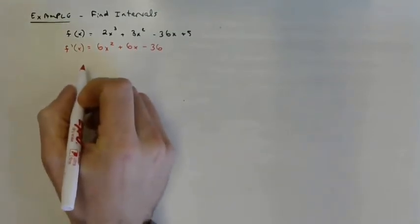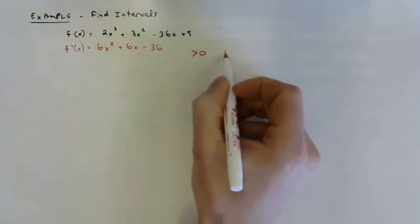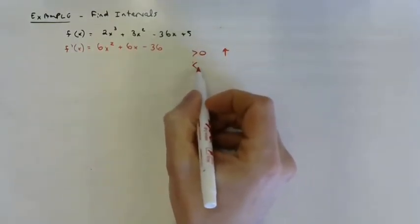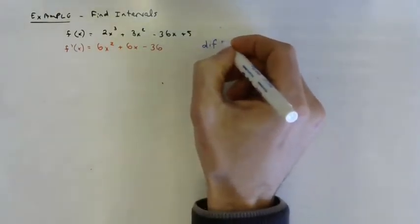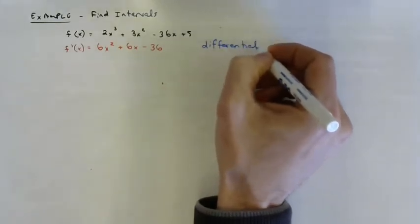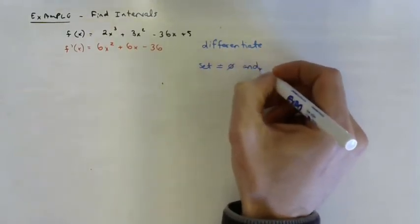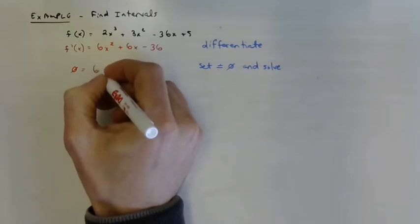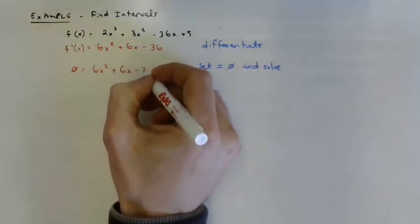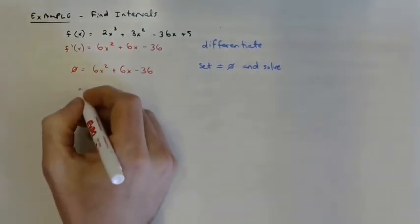Now we set this equal to zero and solve it, because where f prime of x is greater than zero we'll have increasing, and where it is less than zero we'll have decreasing. We're going to factor. We've got zero equals 6x squared plus 6x minus 36. The first step to factoring is looking for a common factor — we see six is common to all terms.